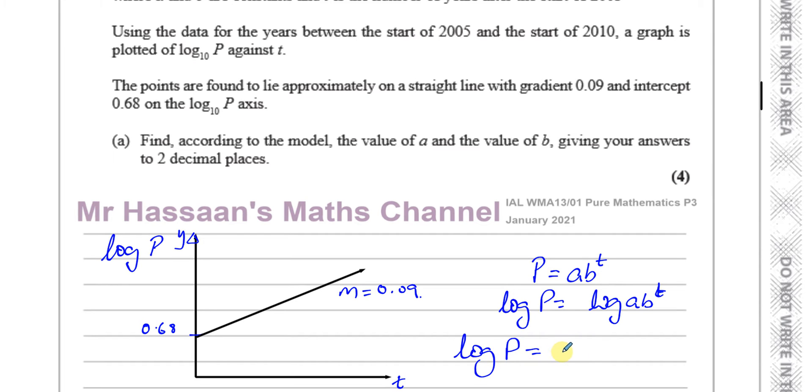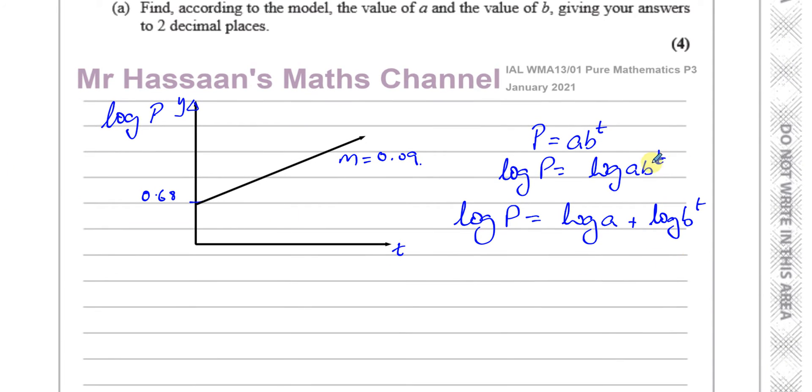Now I can split this up as a product into a sum. So log P is equal to log A plus log B to the power of T. I'm doing it step by step using the product or addition law of logarithms. And now I can use the power law. This is going to be T times log B.